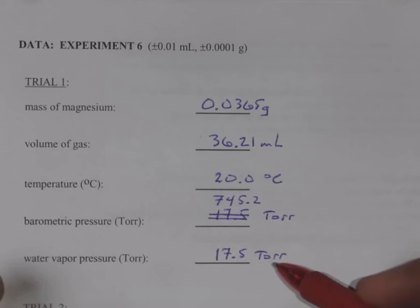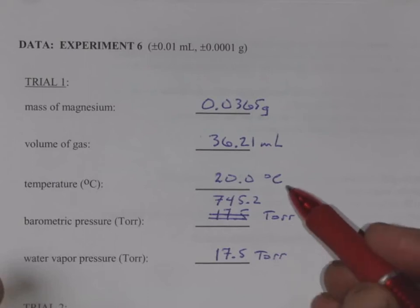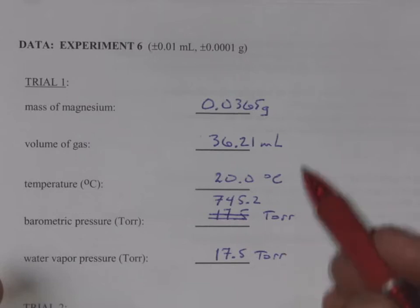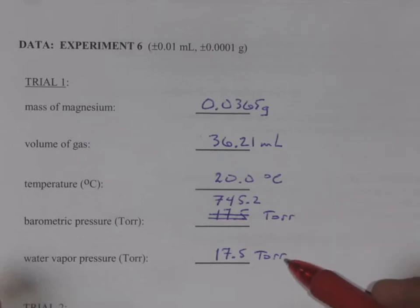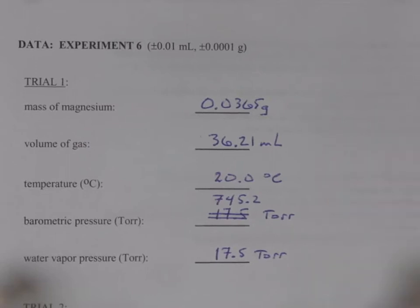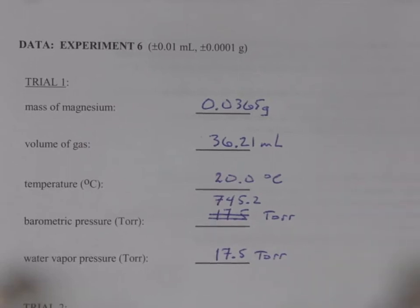And then the water vapor pressure is something we look up based on the temperature. So if we were to do a Google or Wikipedia search and find the vapor pressure of water as a function of temperature at 20 degrees, the water vapor pressure is 17.5. As the temperature rises, this pressure rises, ultimately causing boiling when you exceed atmospheric pressure. So there's our data. Make sure that's copied down, and then we'll get into the calculations for this lab.